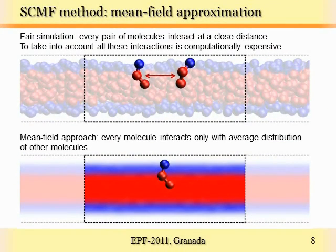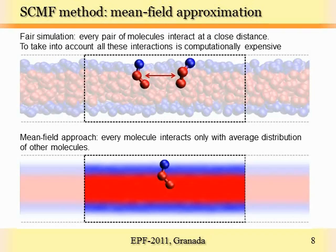The straightforward way to treat this system is to say that if we pick up any pair of molecules and they are close enough to each other, they will interact. To calculate all the forces acting in the system, or the total energy of the system, we should go through all the pairs of molecules and check their interaction. This is where you spend most of your time doing molecular dynamics or Monte Carlo simulation, because you have to calculate forces and energies very often. In the mean-field approach, if you pick up a single molecule and want to calculate how it interacts with other molecules, you do not consider individual interactions between molecules, but instead say that this molecule interacts only with the average distribution of other molecules. This simple idea allows us to perform a numerical minimization of the system free energy and find the equilibrium state and all corresponding equilibrium properties of our system.